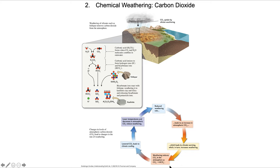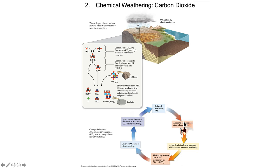We can summarize this process: rocks exposed at the earth's surface weather, lowering CO2 in the atmosphere. Lower CO2 results in a cooling of the climate, and lower temperatures decrease CO2 further, slowing weathering. This reduced weathering rate leads to an increase in atmospheric CO2 — we're not pulling it out as quickly — which leads to climate warming, which increases weathering, which reduces CO2, which leads to cooling. And around we go.